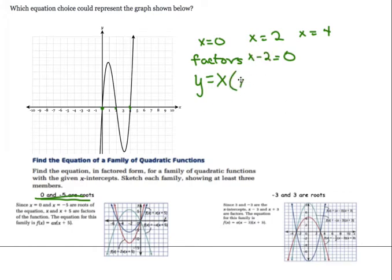For x equals 4, I want this side to be equal to 0, so this is going to be x minus 4. That's also a factor. If that was one of your choices, that would be the equation choice you would pick.